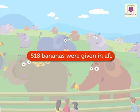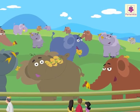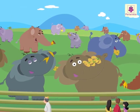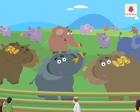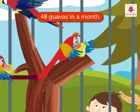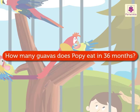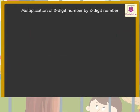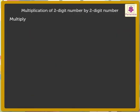Thus, 518 bananas were given in all. Look, they are so happy while eating. Look at Poppy, the parrot. He eats 48 guavas in a month. How many guavas does he eat in 36 months? Let us multiply 48 by 36 directly to find the answer.